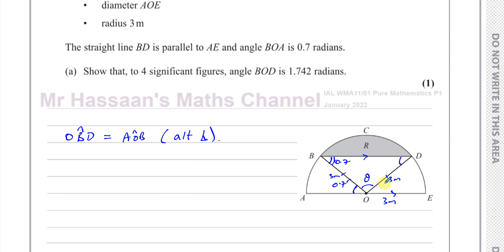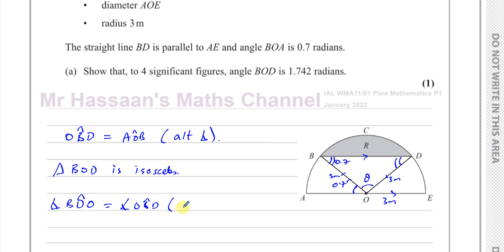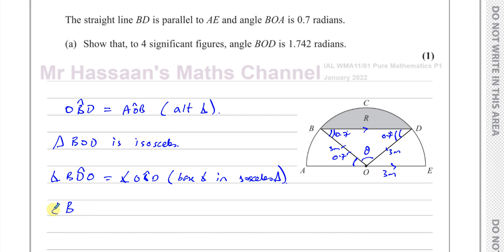So these two angles are the same — this angle is the same as this angle, so that's 0.7. Because triangle BOD is isosceles — both sides are radii — we can say angle BDO is equal to angle OBD, base angles in an isosceles triangle. So this is also 0.7 radians. Therefore, angle BOD is equal to pi minus 0.7 plus 0.7. Pi is 180 degrees in radians, and the sum of angles in a triangle is pi radians.